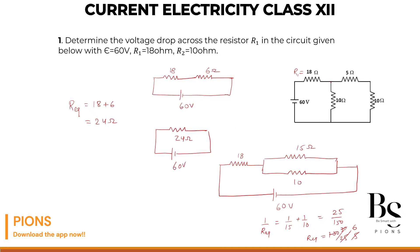What's the current? Current I equals voltage upon resistance. Voltage is 60 upon resistance 24. So 5 by 2 is the current, which is 2.5 amperes, which is going here.